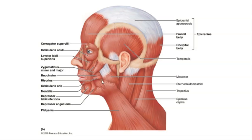Also visible in this diagram is the large, broad muscle on the lateral part of the cheek — the masseter muscle. The masseter functions to elevate the mandible, bringing the lower jaw closer to the upper jaw. This is a muscle that functions in closing the lower jaw, bringing the teeth closer together, and so it functions in biting down and chewing our food.